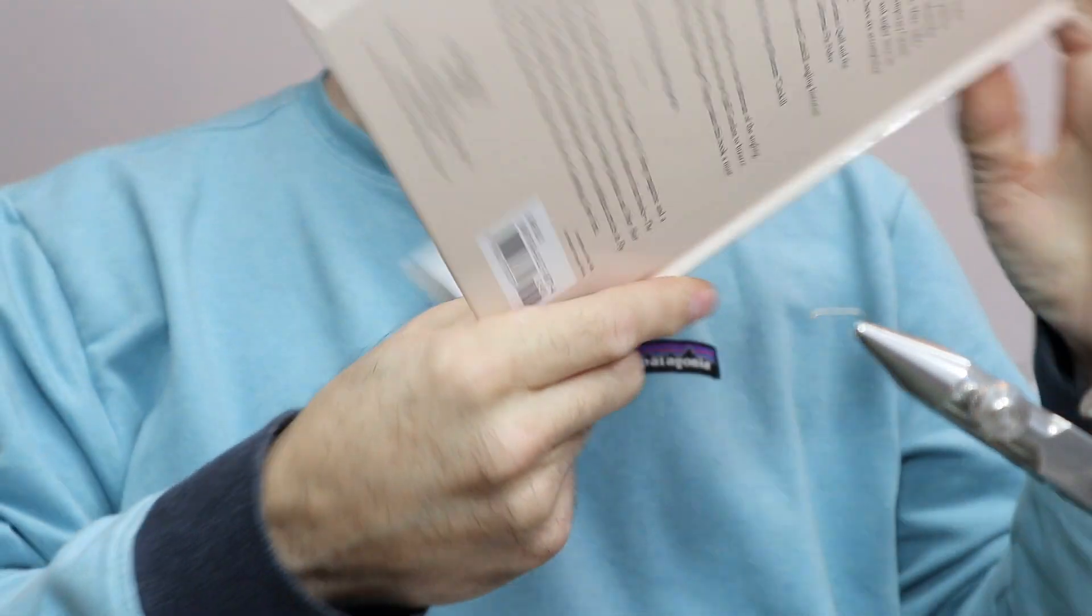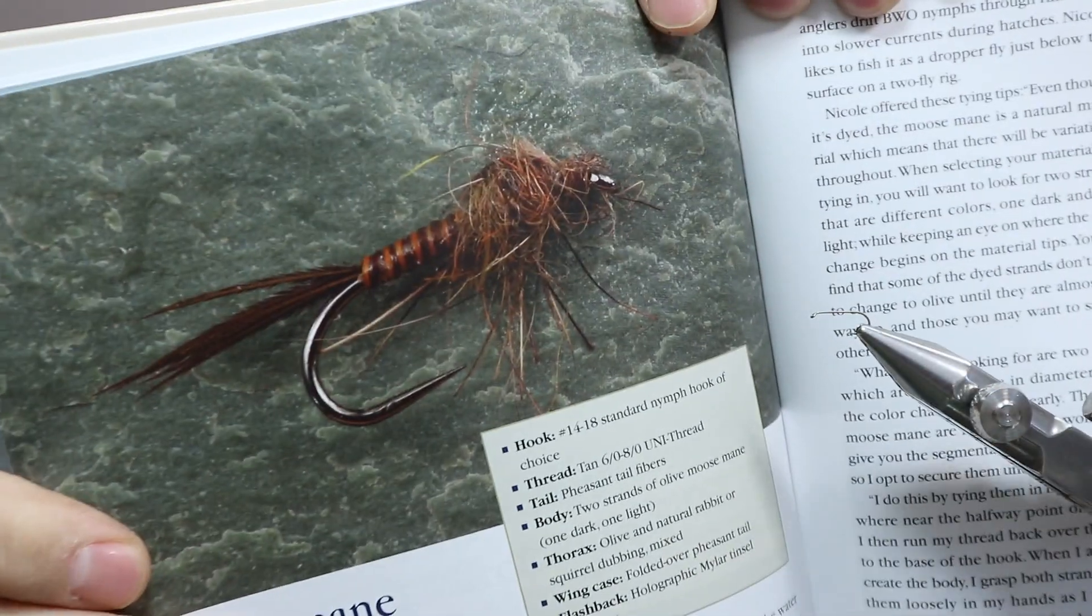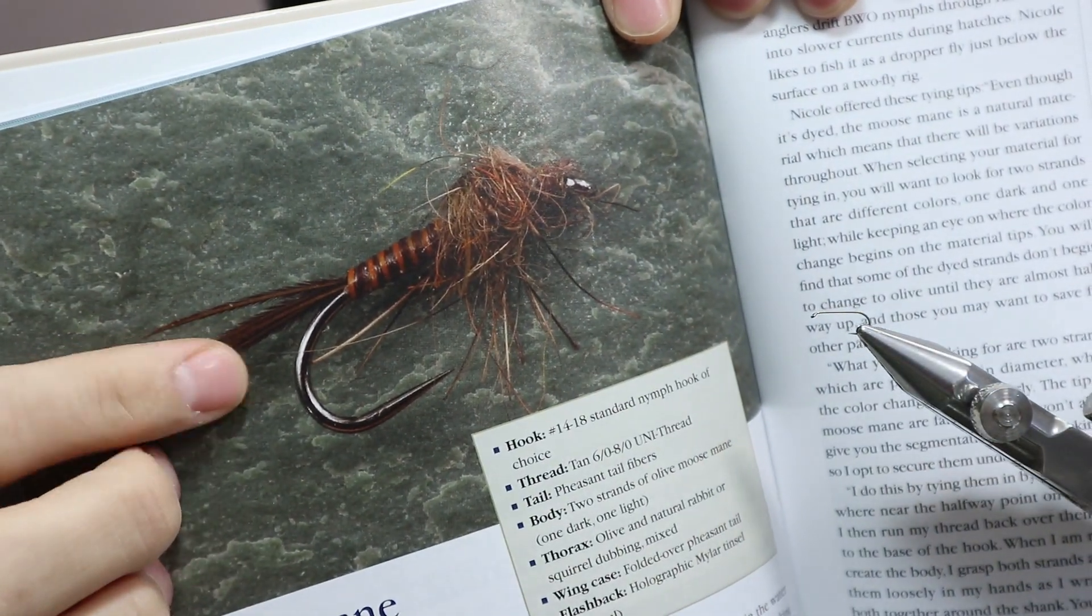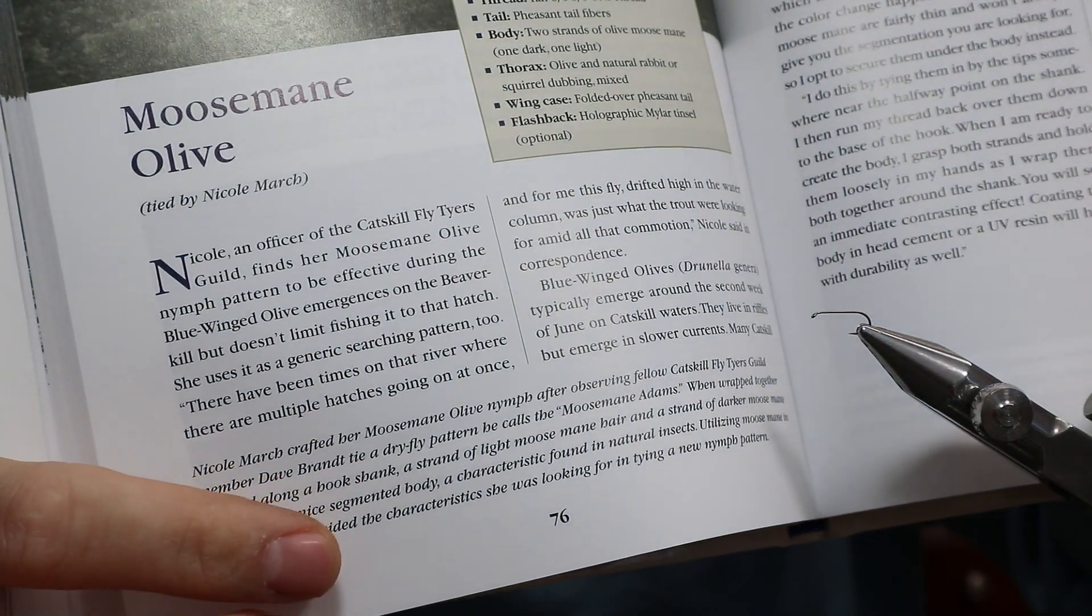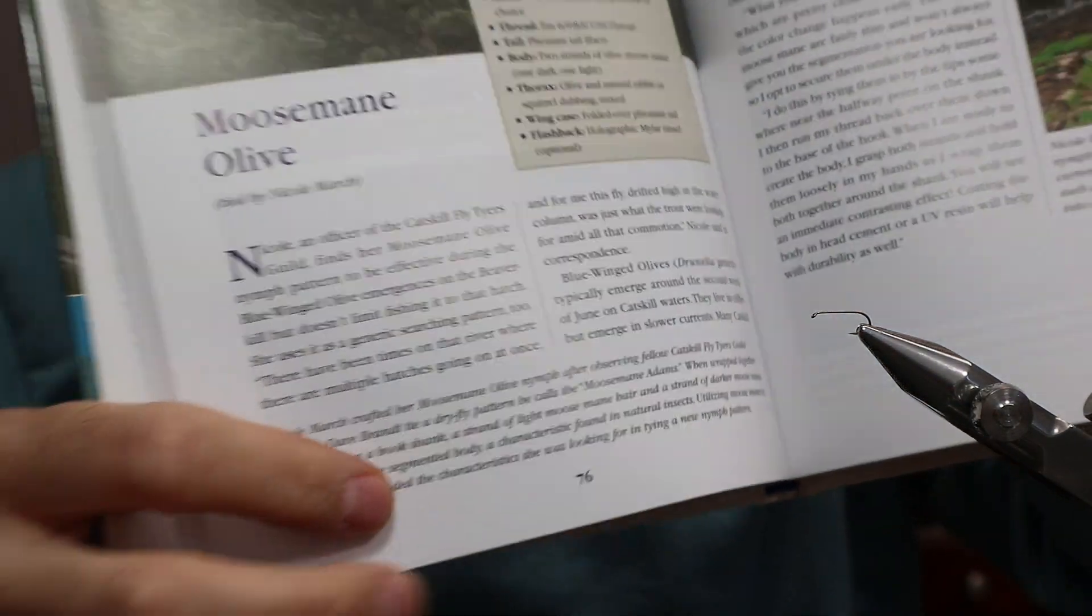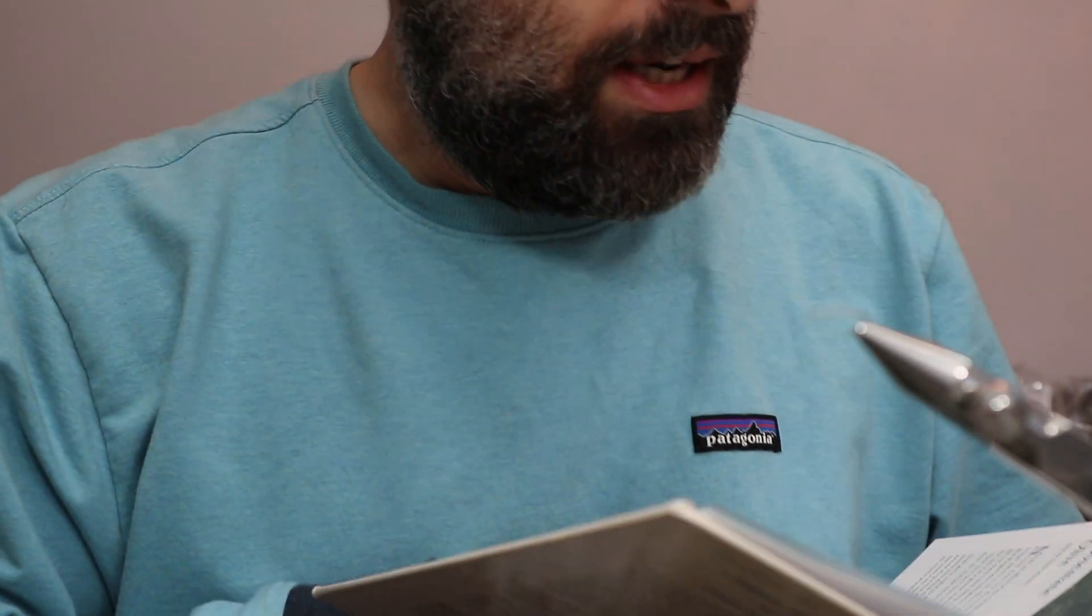But there's this fly by Nicole March. See this right here? This moose mane. Moose mane olive. And I was reading this description down here, and it was talking about a moose mane atoms that Dave Brandt came up with. I'd never heard of it.